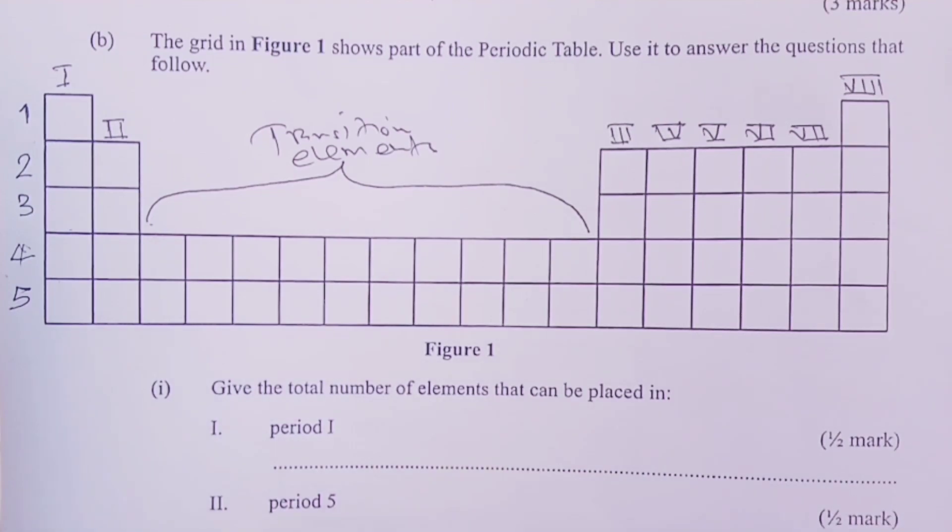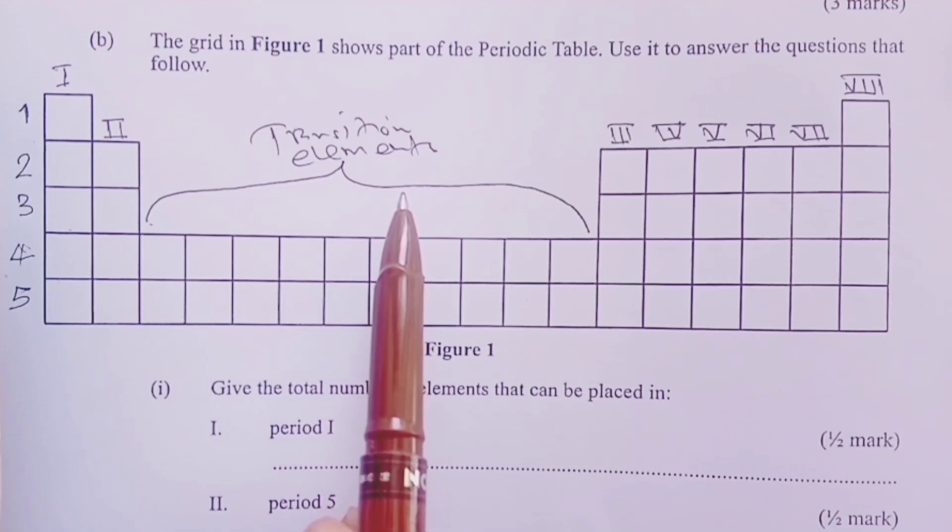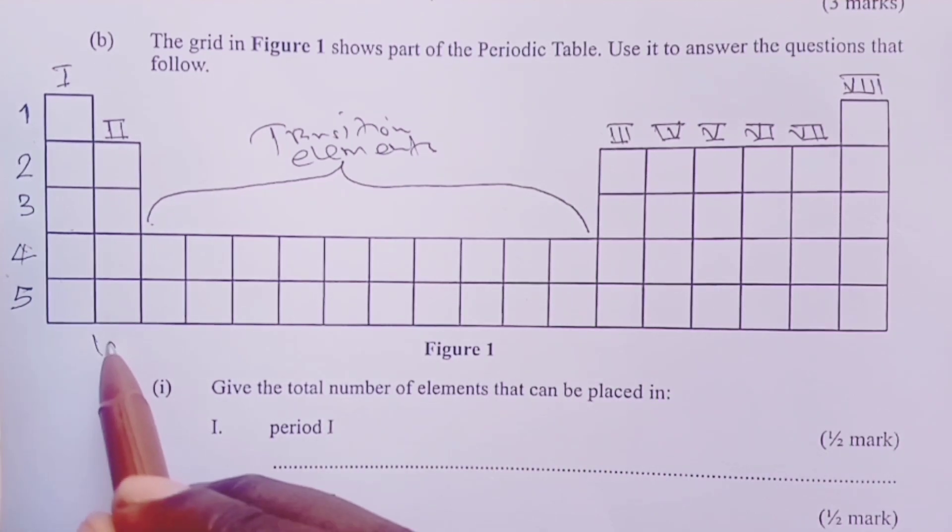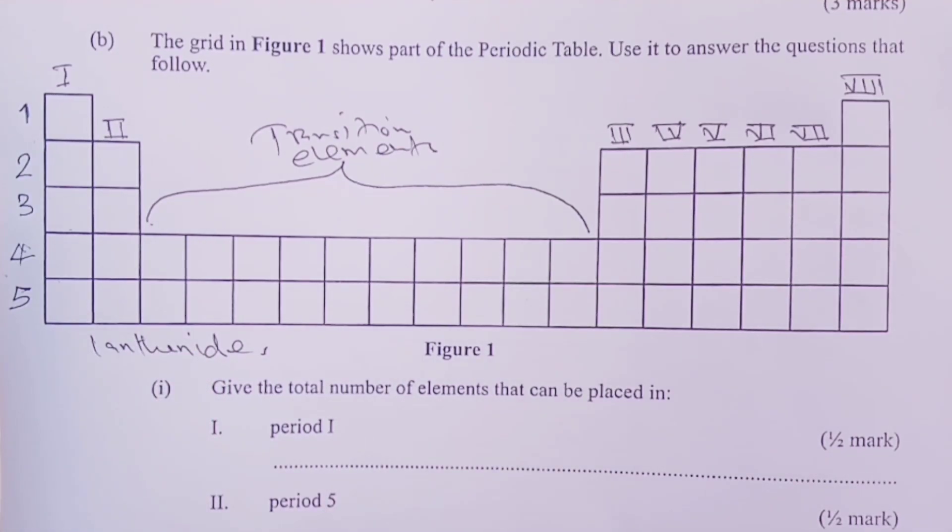But this grid is not complete. A complete grid would have up to 7 periods, with another separation other than transition elements. This separation is called lanthanides. Lanthanides is a separation found in period 6, between elements with atomic number 57 to 72. We call them lanthanides because we name that series based on the first element, that element is element number 57 called lanthanum.